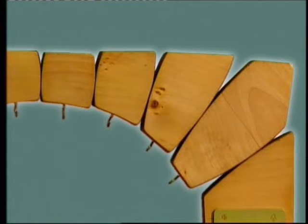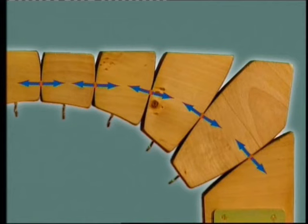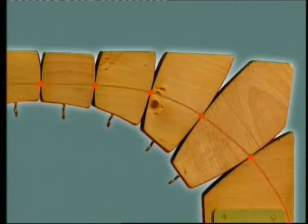Each voussoir is in a state of equilibrium. The compression forces can only pass through these points of contact, each force being balanced by an equal force in the opposite direction. A line of action of the thrust would pass through the structure like this.